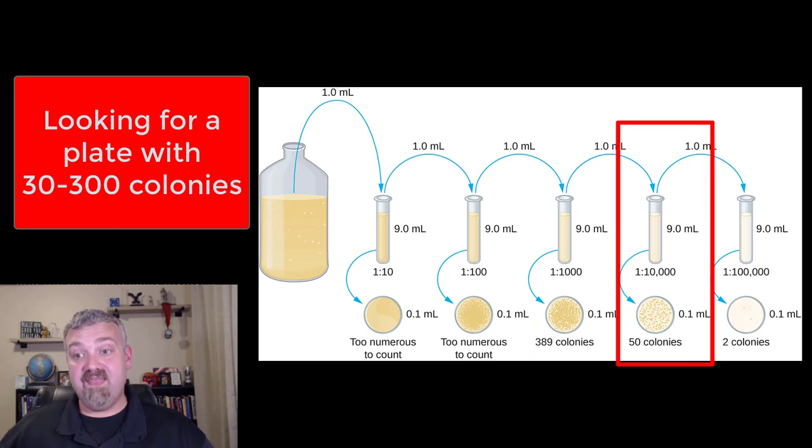So we go to the next one, which would be the 1 to 10,000 dilution sample has 50 colonies on it. And if you want, just real quickly, if you go one more time, you only see a couple colonies, so too small to work with. So out of these five plates, the one I'm most interested in is that 1 to 10,000 dilution that has 50 colonies on it.